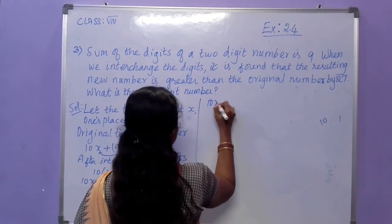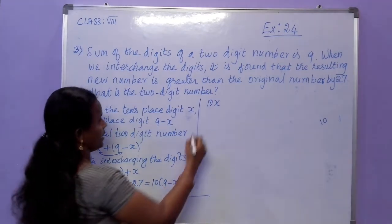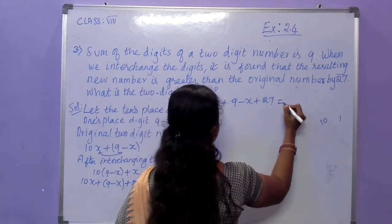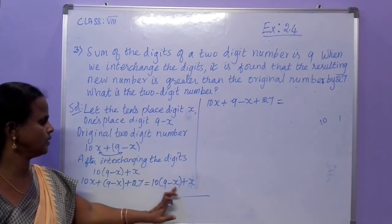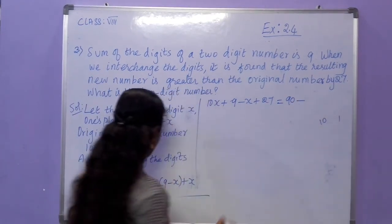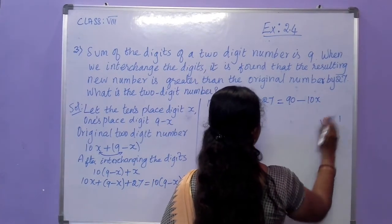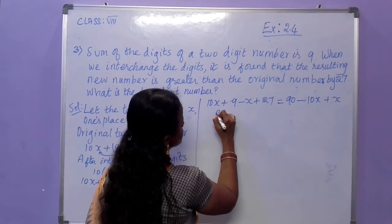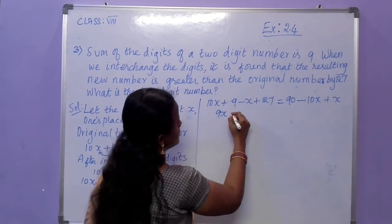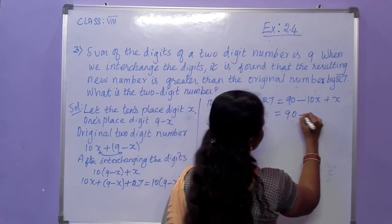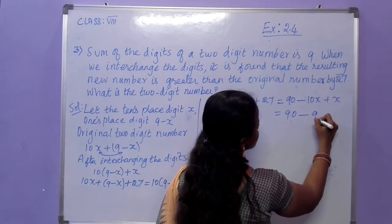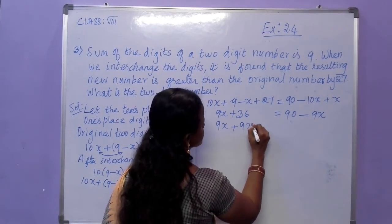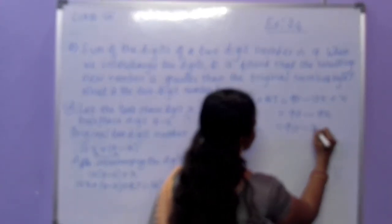Expanding: 10x plus 9 minus x plus 27 equals 90 minus 10x plus x. Simplifying the left side: 9x plus 36. Right side: 90 minus 9x. Now taking all variables to one side: 9x plus 9x equals 90 minus 36.